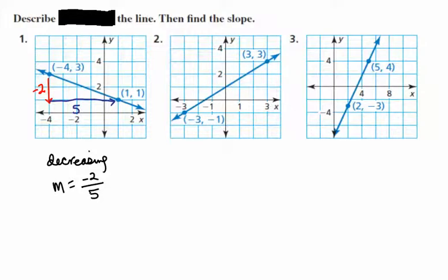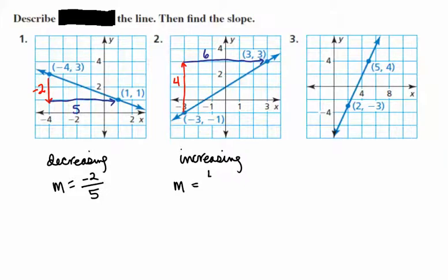The next line, as we move from left to right, is increasing. Since it's increasing, we move up 1, 2, 3, 4 — so positive 4 — and over 1, 2, 3, 4, 5, 6. The slope is up 4 over 6, which simplifies to 2 over 3. That means we could go up 2 and over 3 and hit another good point on the line — and we can see that that does work as well.